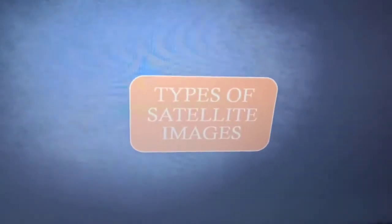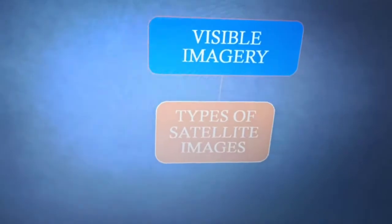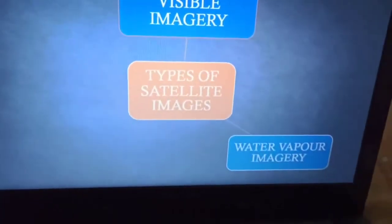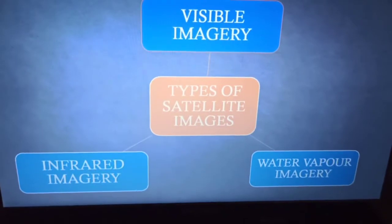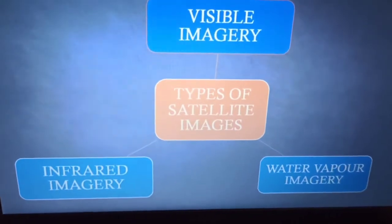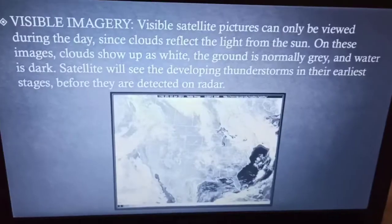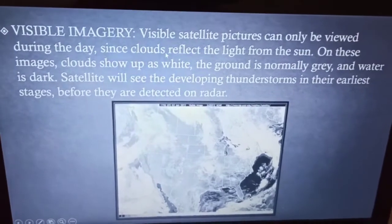Today I'm going to discuss the different types of satellite imagery. Number one is the visible imagery, then we have the water vapor imagery, and the infrared imagery. Let's start with the first one — visible imagery.